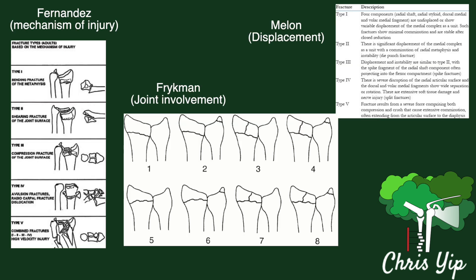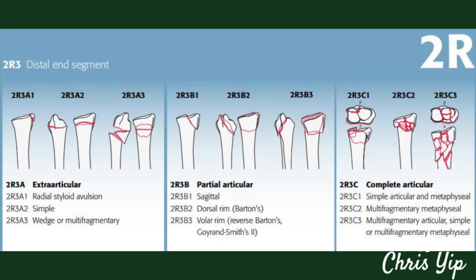Distal radius fractures can be classified based on the mechanism of injury, joint involvement, and displacement. The AO classification is the most comprehensive and broadly divides fractures into extra-articular, partial-articular, and complete-articular. The AO classification is a very important part of the assessment.